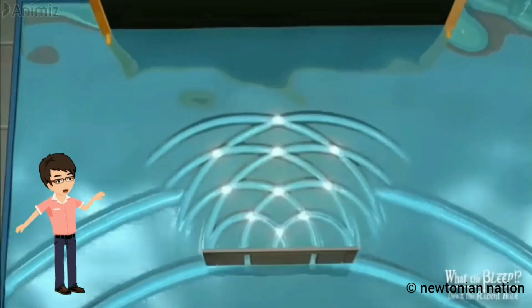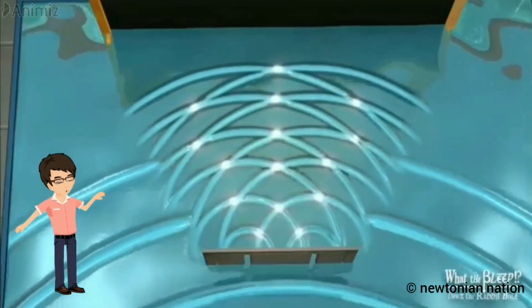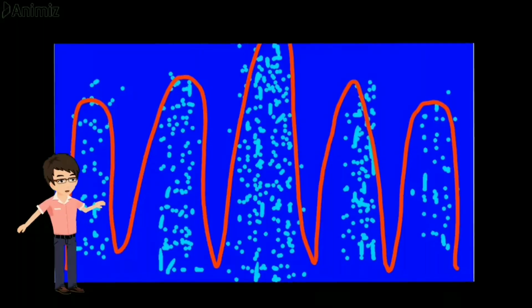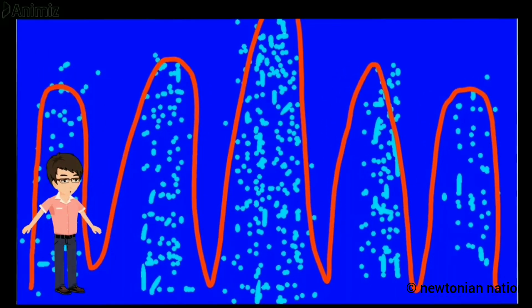When we put a stone in water, it produces waves. Then, we insert the double slit before the wave. So, it forms a pattern which is exactly as the electron pattern which assures that the electron acts as a wave.